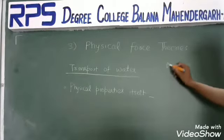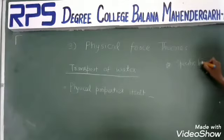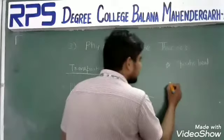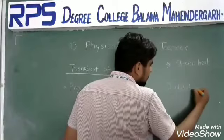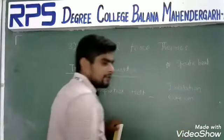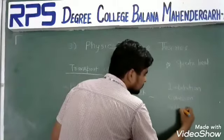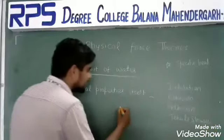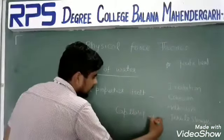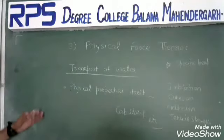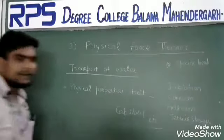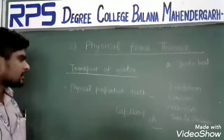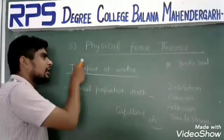Some physical properties of water include high specific heat — though that is particularly a chemical property. Physical properties include imbibition, cohesion — cohesion is a physicochemical property — adhesion, tensile strength of water, and capillary action. According to physical force theories, different scientists said that these physical properties are responsible for the transport of water. The transpiration pull theory is also included in the physical force theory, because transpiration involves physical properties like cohesion, adhesion, and tensile strength.